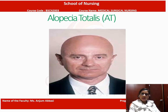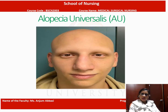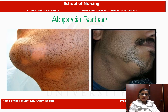Next is alopecia totalis — you can see complete baldness, there is no hair. Next is alopecia universalis. There is a difference between alopecia totalis and alopecia universalis: this person is not having eyebrows or eyelashes either. Alopecia universalis means complete hair loss from the entire body.